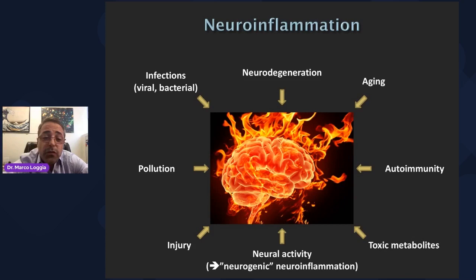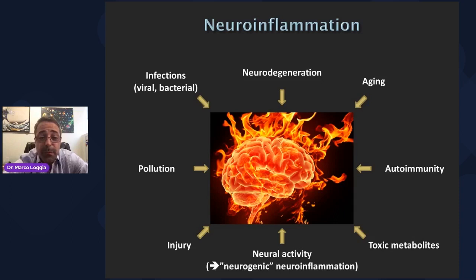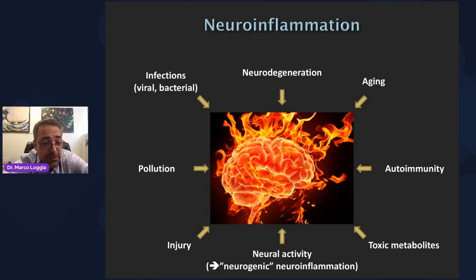What causes neuroinflammation? We can see it across many different conditions and situations: neurodegenerative disorders, aging itself, autoimmunity, exposure to pollution and toxic metabolites, and of course injuries and viral and bacterial infections. We hear a lot about viral infections from the past couple of years with COVID. All of these things are thought to be accompanied by brain inflammation.